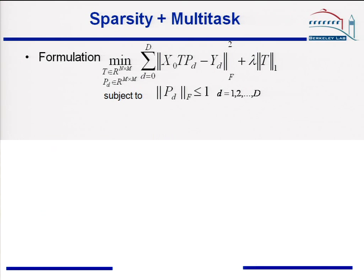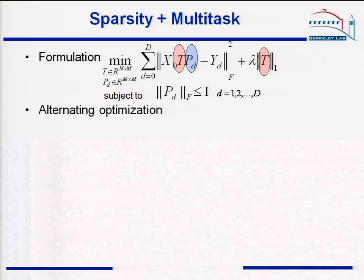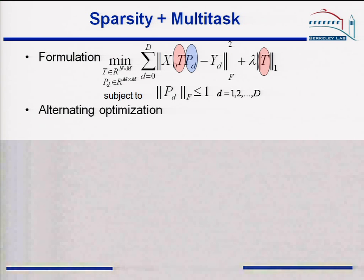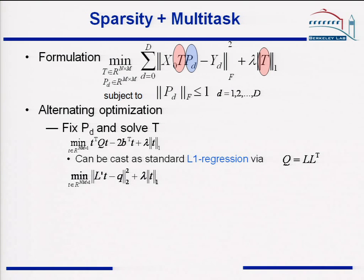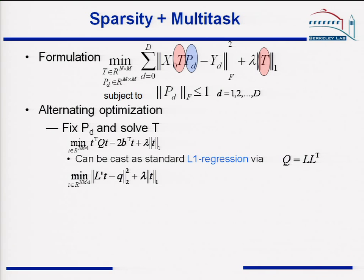The problem has two sets of matrix variables: template T and perturbation P_d. Globally, this problem is not convex. However, the objective is convex with regard to each set of variables, so we propose an alternating optimization scheme. We first fix P_d and solve for T. Through linear algebraic manipulations, it can be written as a standard convex problem with a quadratic term and L1 regularization. We further perform a low-rank approximation on the quadratic term, which allows us to approximately transform the problem into a standard L1-regularized least squares, for which there are various large-scale solvers available.